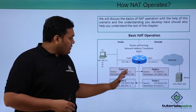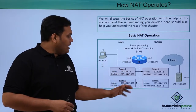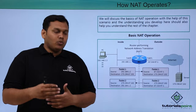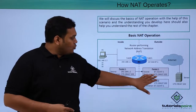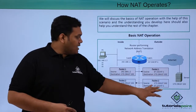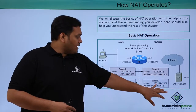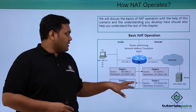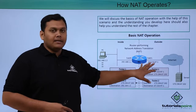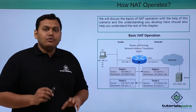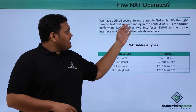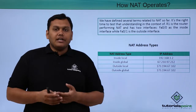This is the basic NAT operation diagram. You can see how packets travel — Packet 1 and Packet 2 move from the inside interface to the outside interface and back. This router performs the NAT, and we will discuss several terms related to NAT in detail.